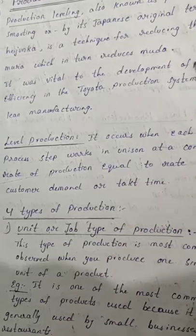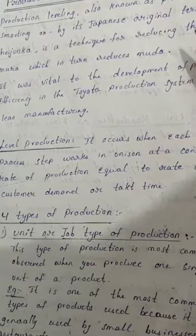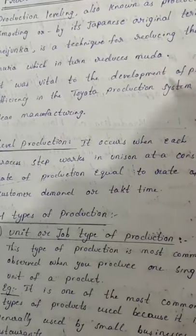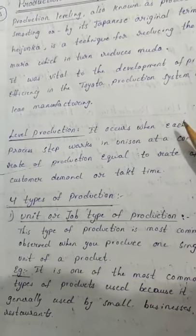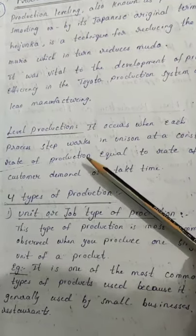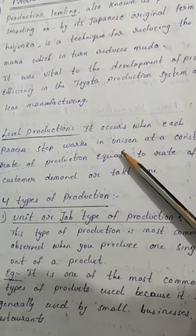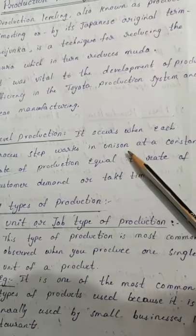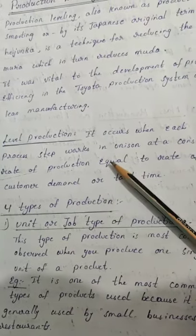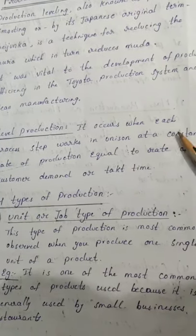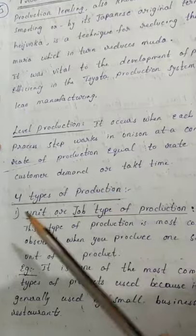Lean management is also known as continuous improvement of the manufacturing industry. Lean production occurs when each process step works in unison at a constant rate of production equal to the rate of customer demand or takt time.